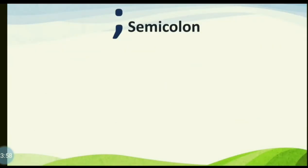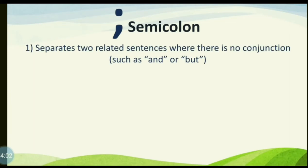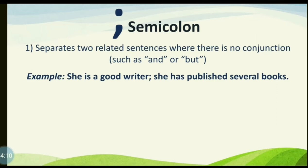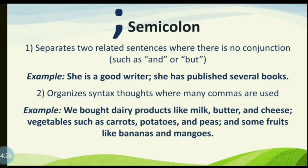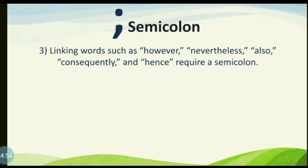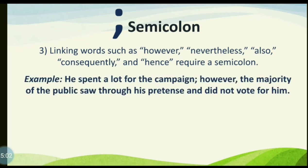Now we move on to the semicolon. A semicolon separates two related sentences where there is no conjunction such as 'and' or 'but.' Example: 'She is a good writer; she has published several books.' A semicolon also organizes complex sentences where many commas are used, and it is required before linking words such as 'however,' 'nevertheless,' 'also,' 'consequently,' and 'hence.' Example: 'He spent a lot for the campaign; however, the majority of the public did not vote for him.'